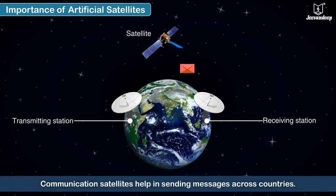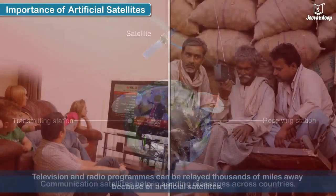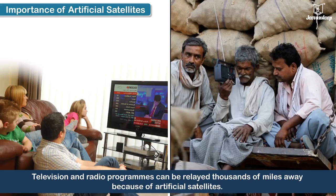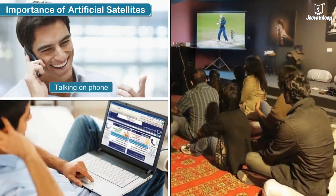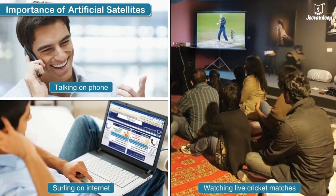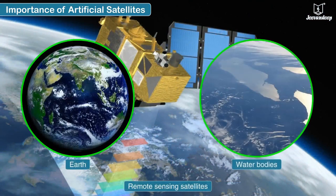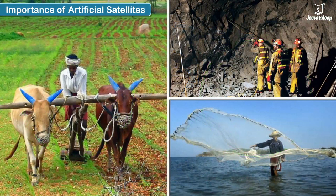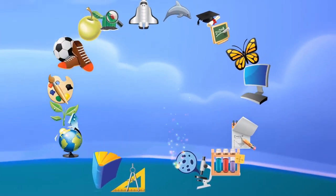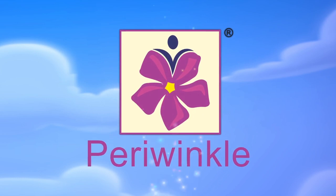Communication satellites help in sending messages across countries. Television and radio programs can be relayed thousands of miles away because of artificial satellites. Talking on the phone, surfing the internet and watching live cricket matches have become possible only because of communication satellites. Remote sensing satellites give us valuable information about the Earth and its water bodies, and are particularly helpful in advising farmers, miners and fishermen.